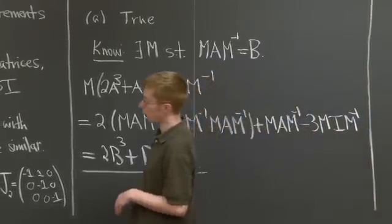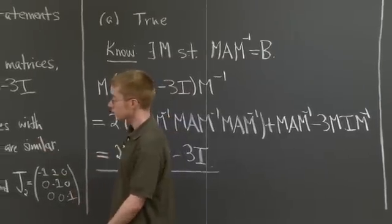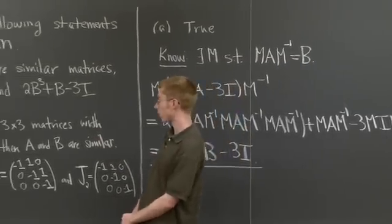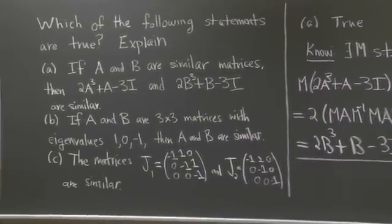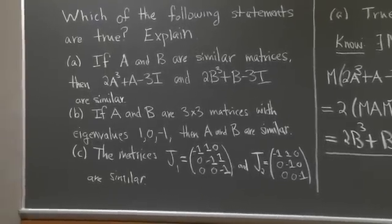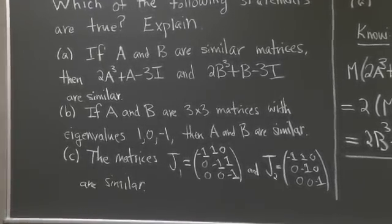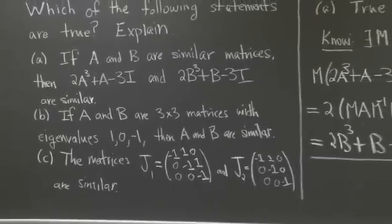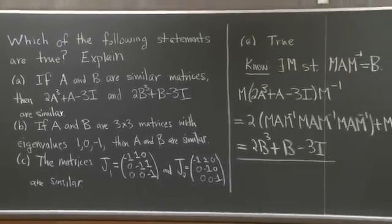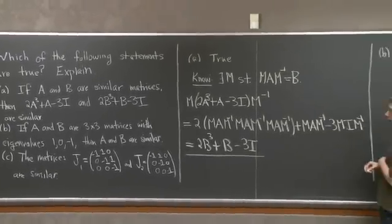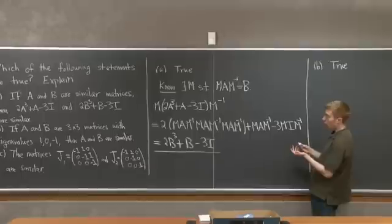Now let's go on to part B. So now A and B are 3 by 3 similar matrices with the same eigenvalues, and their eigenvalues are distinct. So it turns out that B is true as well. Why is that?